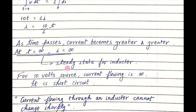Suppose we have a 10 volt source and the current flowing becomes infinite at t equals infinity — just for a 10 V source the current flowing in the inductor becomes so large, close to infinite. Can't we say that this is a short circuit condition? It is in fact the short circuit condition. When we short circuit a voltage source, the current becomes huge, nearly infinite. That is why we can say that the current flowing through an inductor becomes infinite when we analyze it after a considerable amount of time.